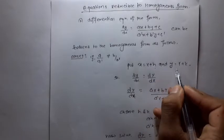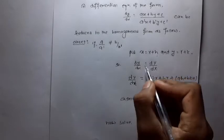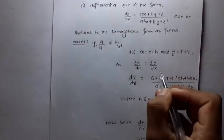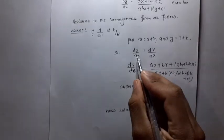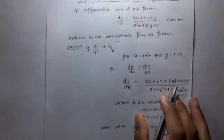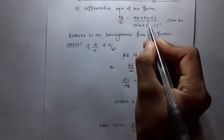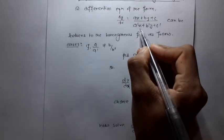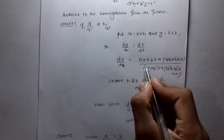We put x = capital X + h and y = capital Y + k. After differentiation, dy/dx becomes d(capital Y)/d(capital X). We then substitute (x = X+h) and (y = Y+k) into the equation, and choose h and k to eliminate the constant terms, reducing to a homogeneous form in the original variables.